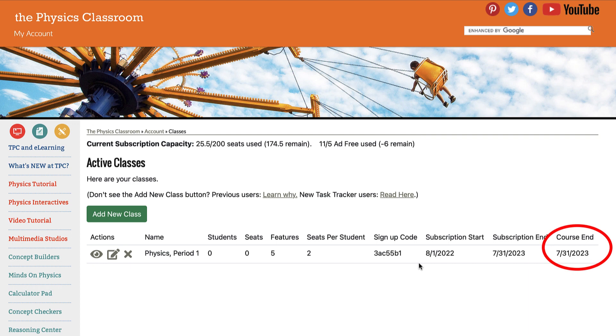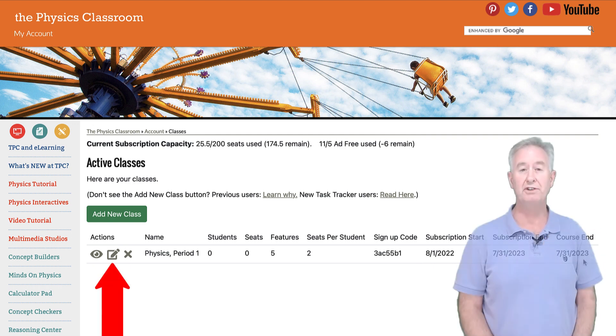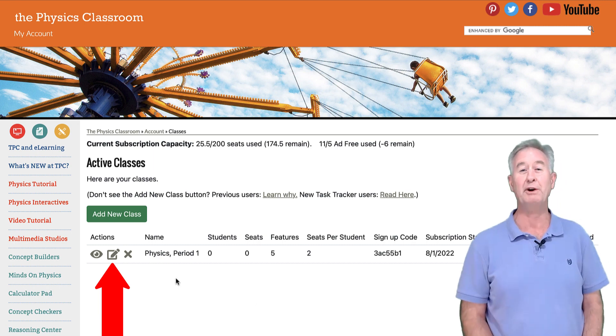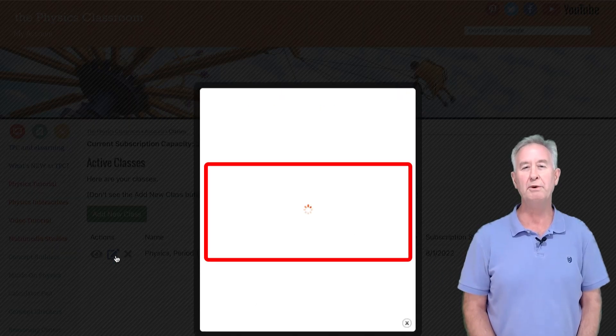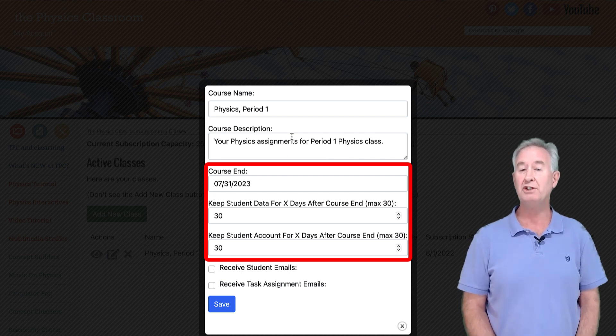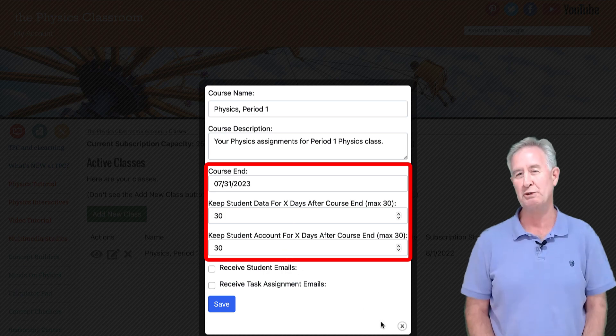At the end of the line is a course end date. If you'd like to manually change this, you can tap on the pencil icon or edit icon next to your course name. Fill out the form in order to change the course end date and if you'd like to change the day at which we delete all student accounts, you can do that as well.